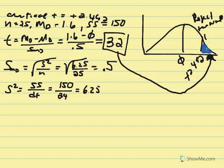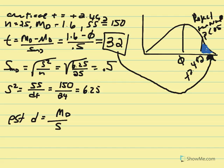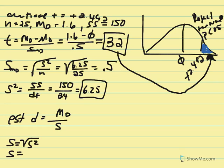We also calculate Cohen's d since we haven't had an example yet. The estimated d equals the mean difference over the standard deviation. Variance is 6.25, so standard deviation equals the square root of 6.25, which is 2.5. Therefore d equals 1.6 divided by 2.5, which gives us 0.64.